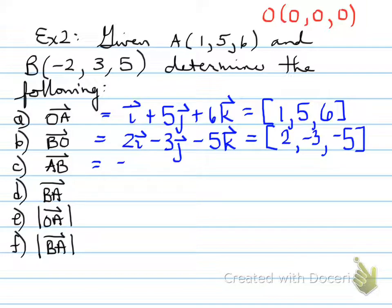Next one, A to B. How does A move to B? Well, it goes from 1 to -2, which means down 3. 5 to 3, which means down 2, and 6 to 5 means down 1. So what will that mean in component form? Down 3, down 2, and down 1.